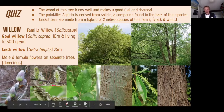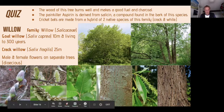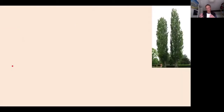When male and female flowers occur on separate trees, there's a Latin word for this: dioecious — from 'di' meaning two and 'oikos' meaning home in Greek. So dioecious means two homes. I'll refer to that a little more through the presentation.